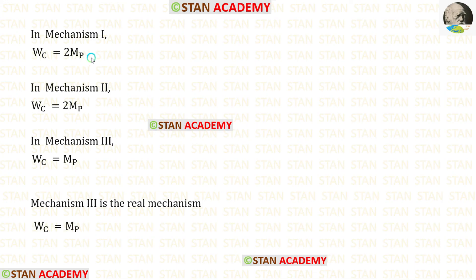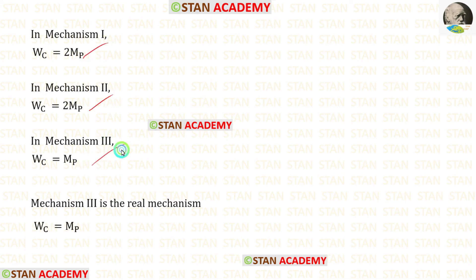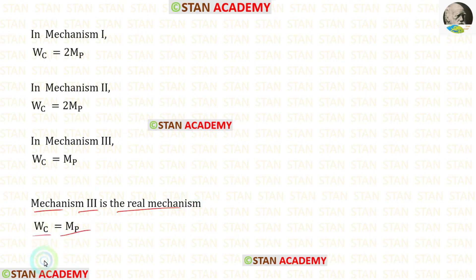We have found the collapse load three times — in the first mechanism, second mechanism, and third mechanism. When collapse load is asked, we select the minimum value. Out of these three, mb is the minimum value. So mechanism 3 is the real mechanism and the collapse load wc is mb. Now we are going to end this session. Thank you for watching this video.